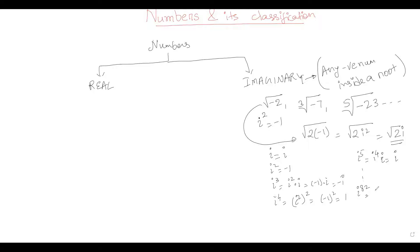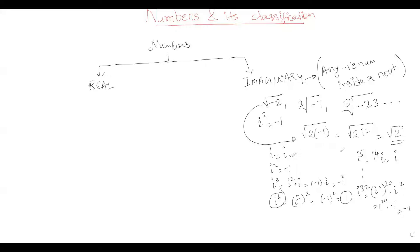Suppose you need to simplify i raised to power 82. This can be written as i to the power four, raised to power 20, times i squared. Since i4 is one, this becomes one raised to power 20 times minus one, which equals minus one. So any higher power of i can be expressed in terms of one, minus one, or i. These are the basic things to know about imaginary numbers.